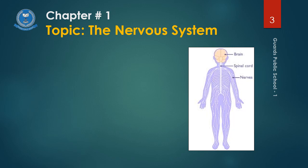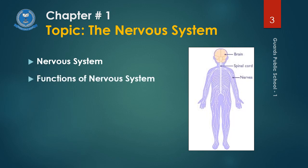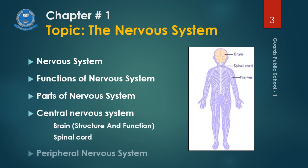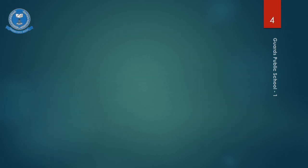In this chapter, we will discuss the following topics: Definition of the Nervous System, Function of the Nervous System, Parts of the Nervous System, Central Nervous System in which we discuss Brain and Spinal Cord, and the Peripheral Nervous System in which we discuss Neurons or Nerve Fibers. But in today's lecture, we will cover the first four topics: Nervous System's Definition, Functions, Parts, and the Central Nervous System.